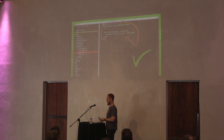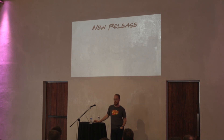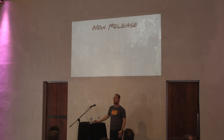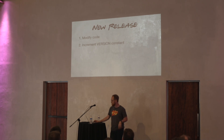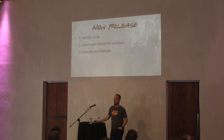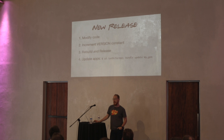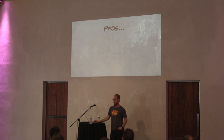Going over the new release process — and this is relevant if you are involved in open source, which I encourage all of you to at least dip your toe into. The release process is very simple: modify the code, increment your version constant remembering that the base methodology is semantic versioning, then rebuild and release using the same rake release command. It will push it where it needs to go, tag it, and do all of the above. Then you can update your gem in your application.